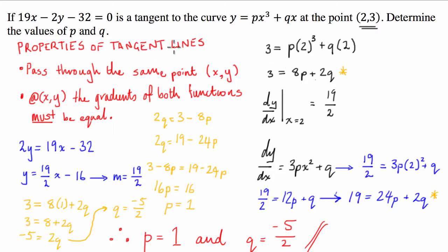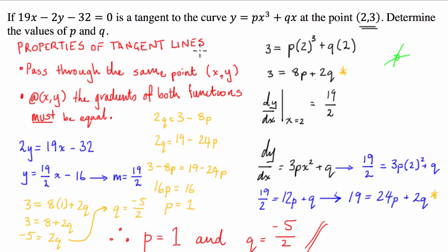Just a quick recap: we used two properties of tangent lines to solve this problem. First, both lines must pass through the same point on Cartesian coordinates. Second, at the point where they meet, the gradient of both functions must be equal. These two properties let us derive the simultaneous equations needed to solve for our two unknowns.